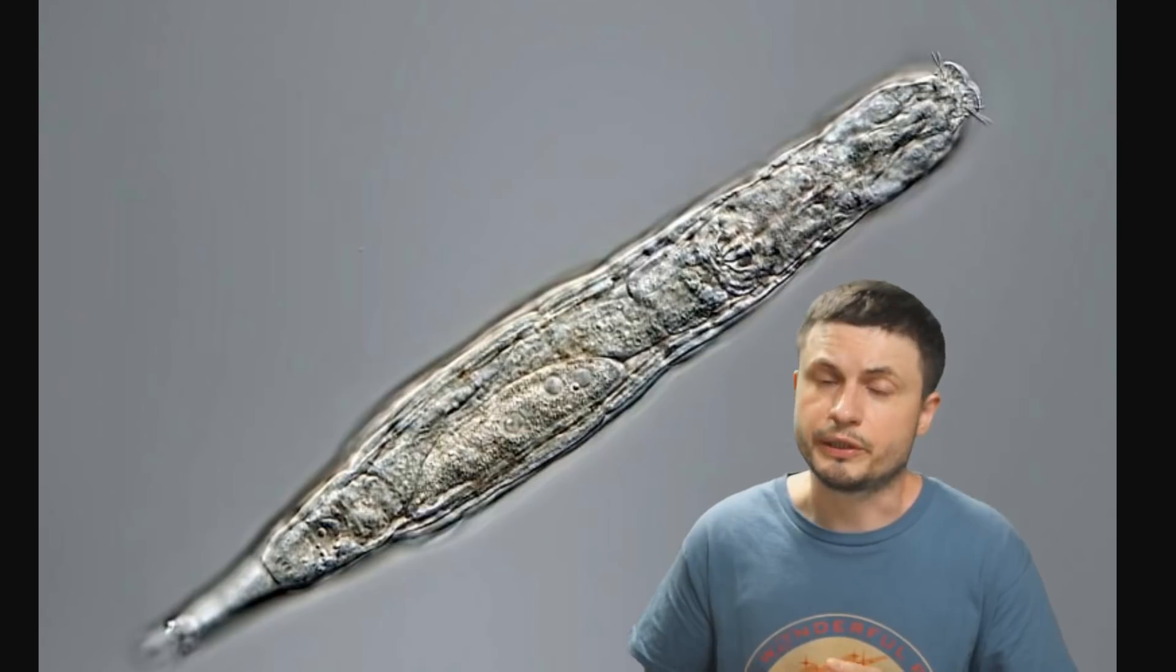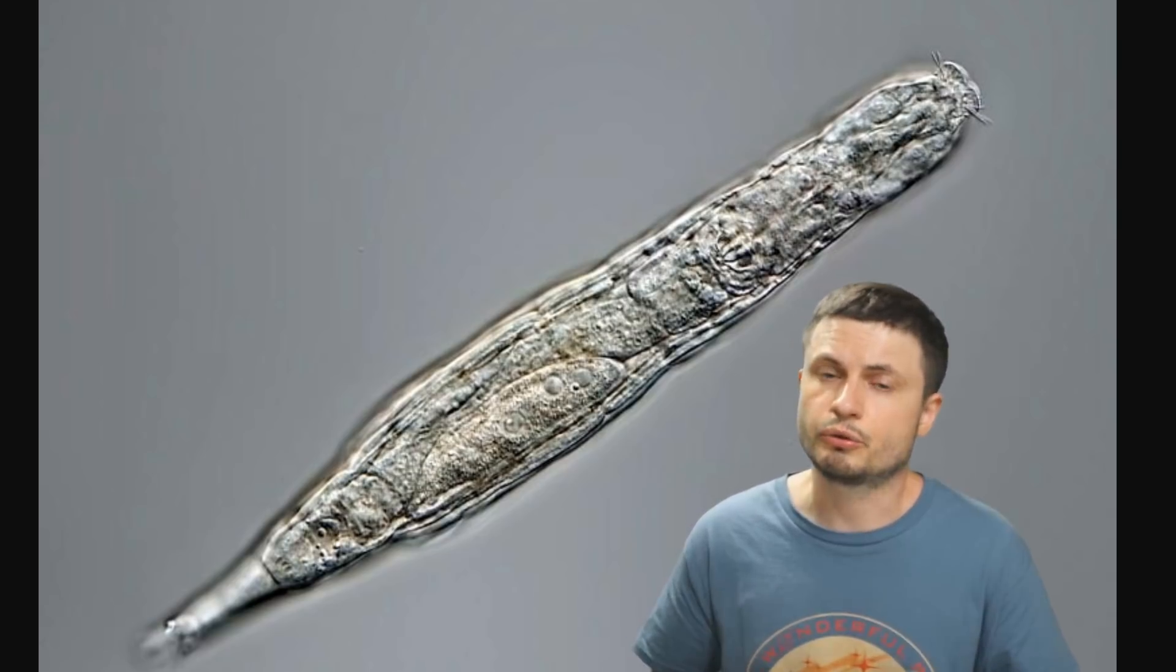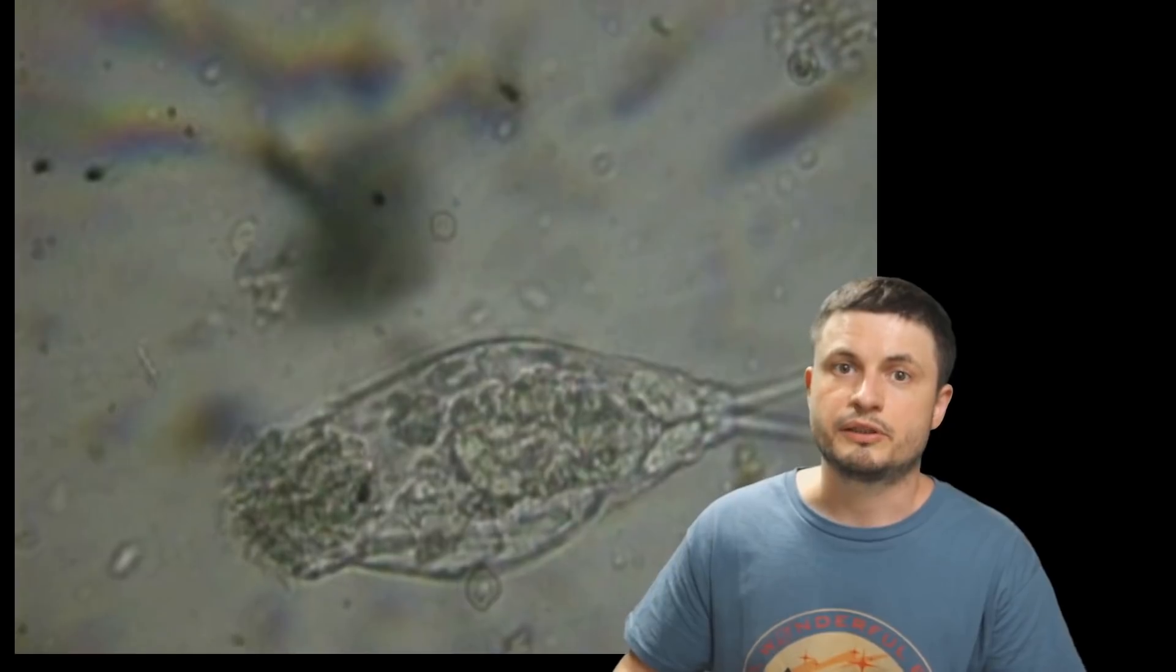Interestingly enough, their nervous system including their tiny brains represents roughly around 25% of all the cells in their body. Although that might sound like a lot, their total cell number is around 1,000 cells in total, which is not a lot when you think about it, but just like other animals they're still pretty complex.